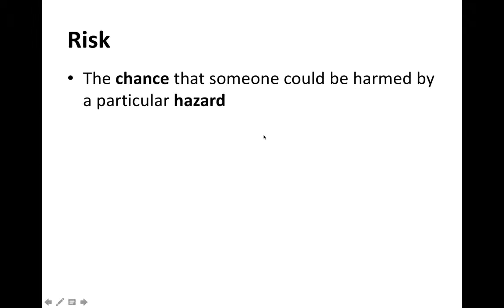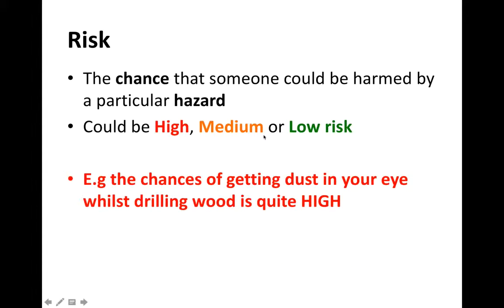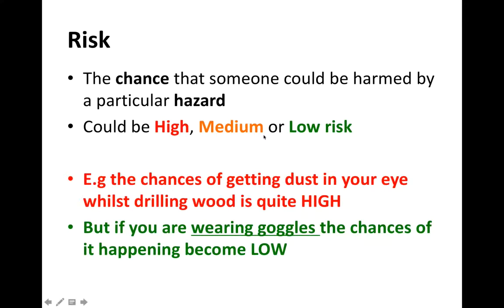When you do a risk assessment, you need to be aware that risk is the chance that someone could be harmed by a particular hazard. This could be a high, medium, or low risk. For example, the chances of getting dust in your eye whilst drilling a piece of wood is actually quite high. However, if you're wearing goggles, the chances of that actually happening become low.